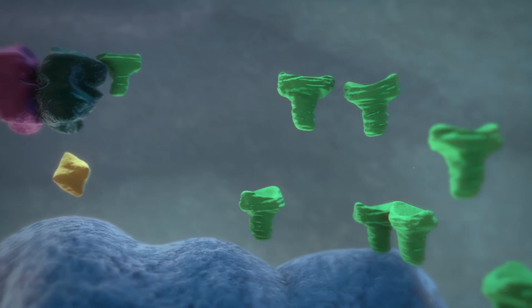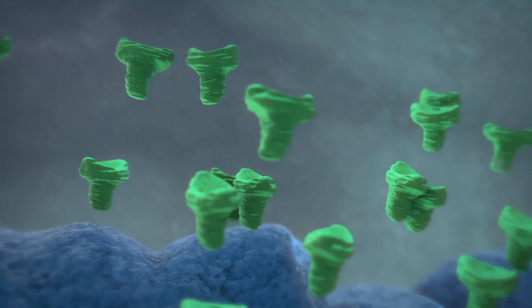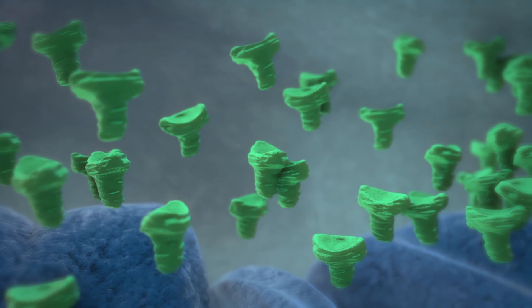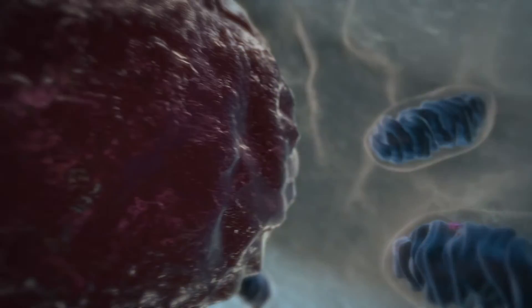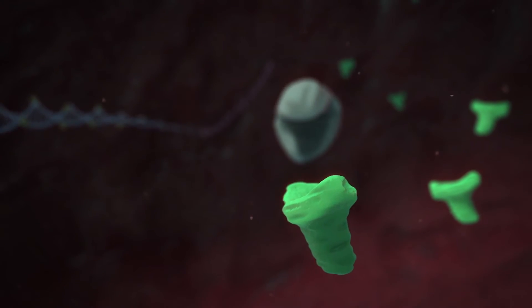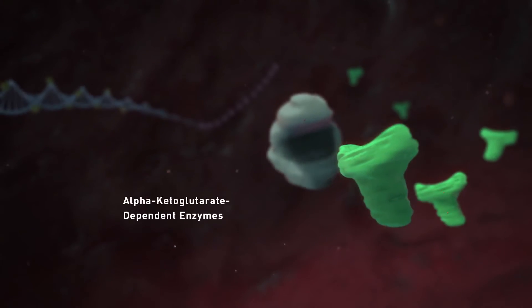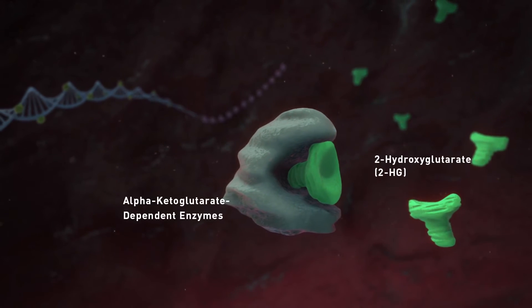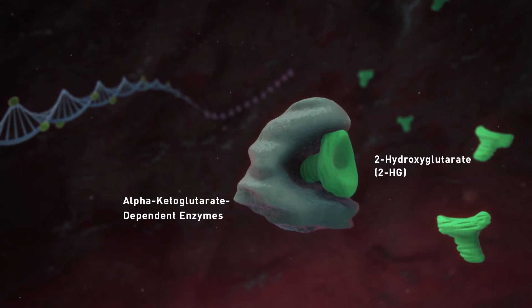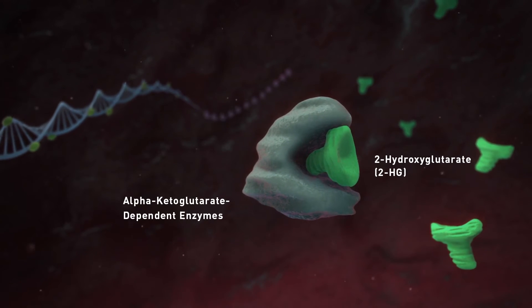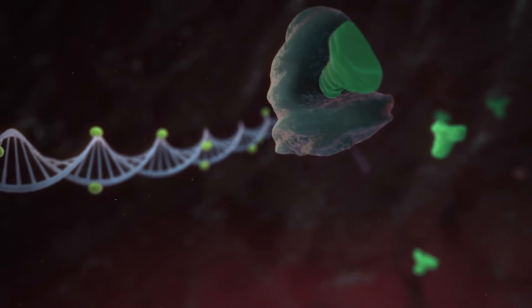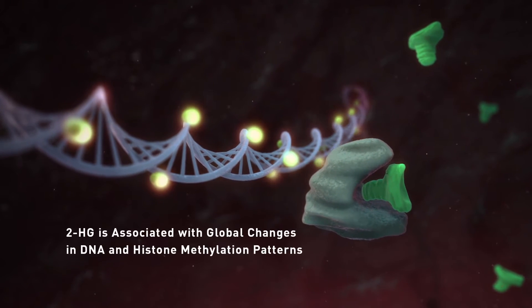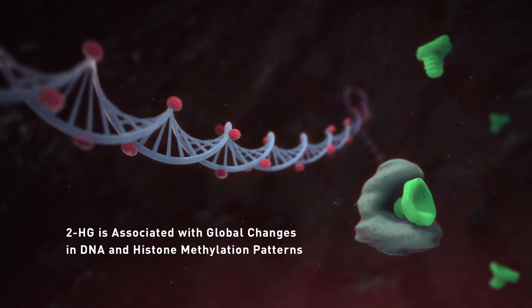The excess production of 2-HG can disrupt the function of cytoplasmic and nuclear alpha-ketoglutarate-dependent enzymes. This disruption occurs because of the chemical similarity between 2-HG and alpha-ketoglutarate. 2-HG binding to alpha-ketoglutarate-dependent enzymes prevents their ability to demethylate DNA and histones. Therefore, elevated levels of 2-HG are associated with the abnormal methylation of DNA and histone proteins.